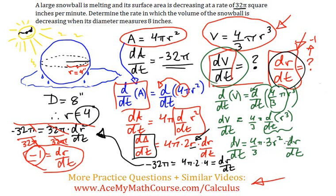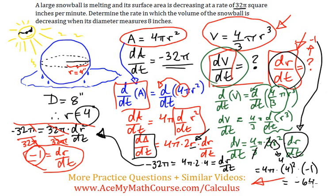So now let's start plugging things in. dr/dt, we just learned, was -1. r is just 4. The 3s can cancel out. So, dV/dt will be equal to 4π times 4² times -1. 4² is 16 times 4, 64 times -1, -64π. And that's the answer.